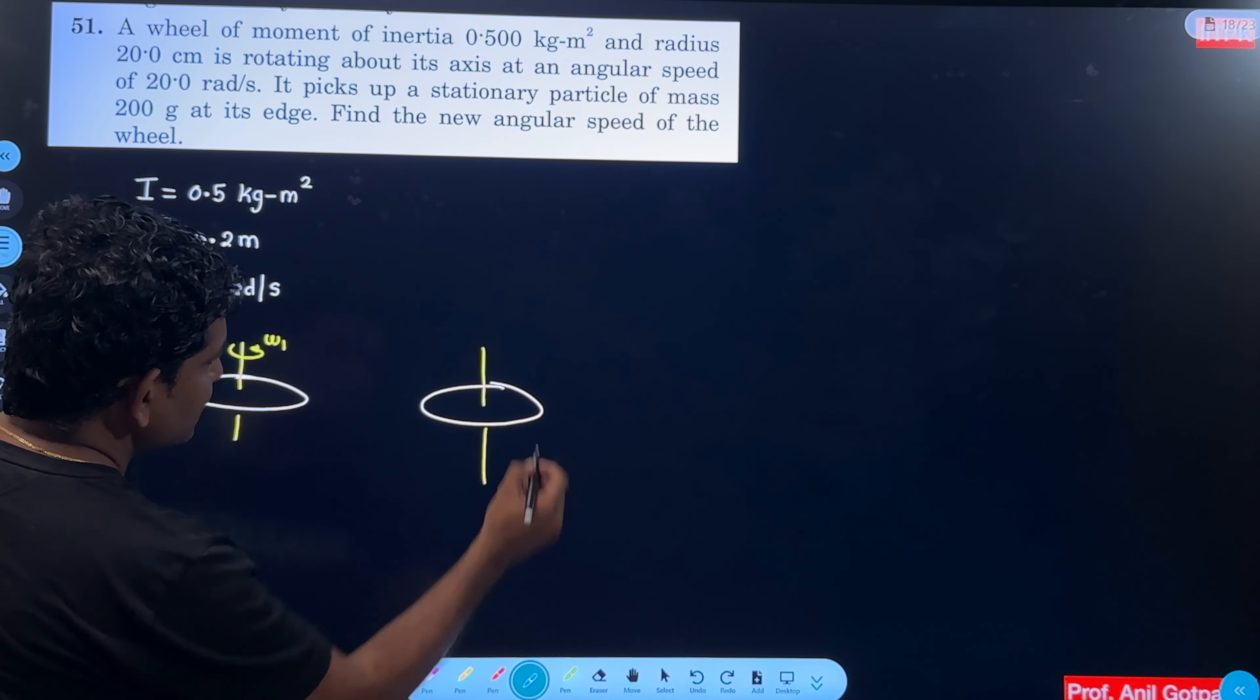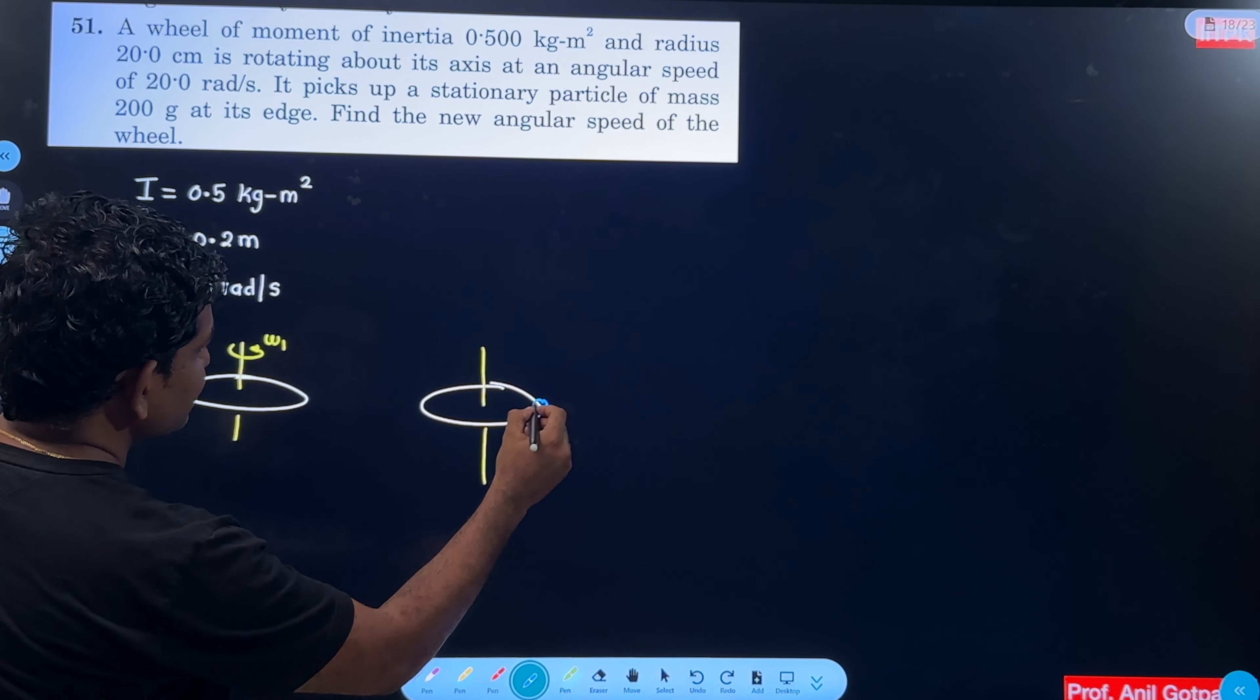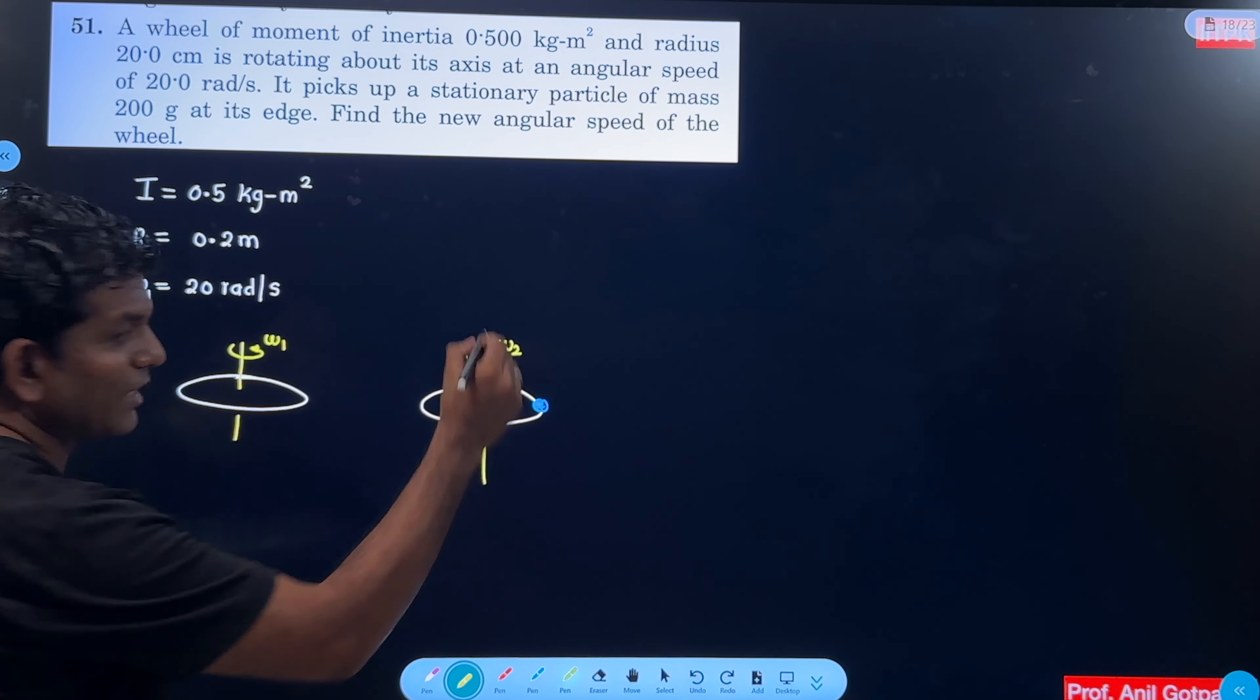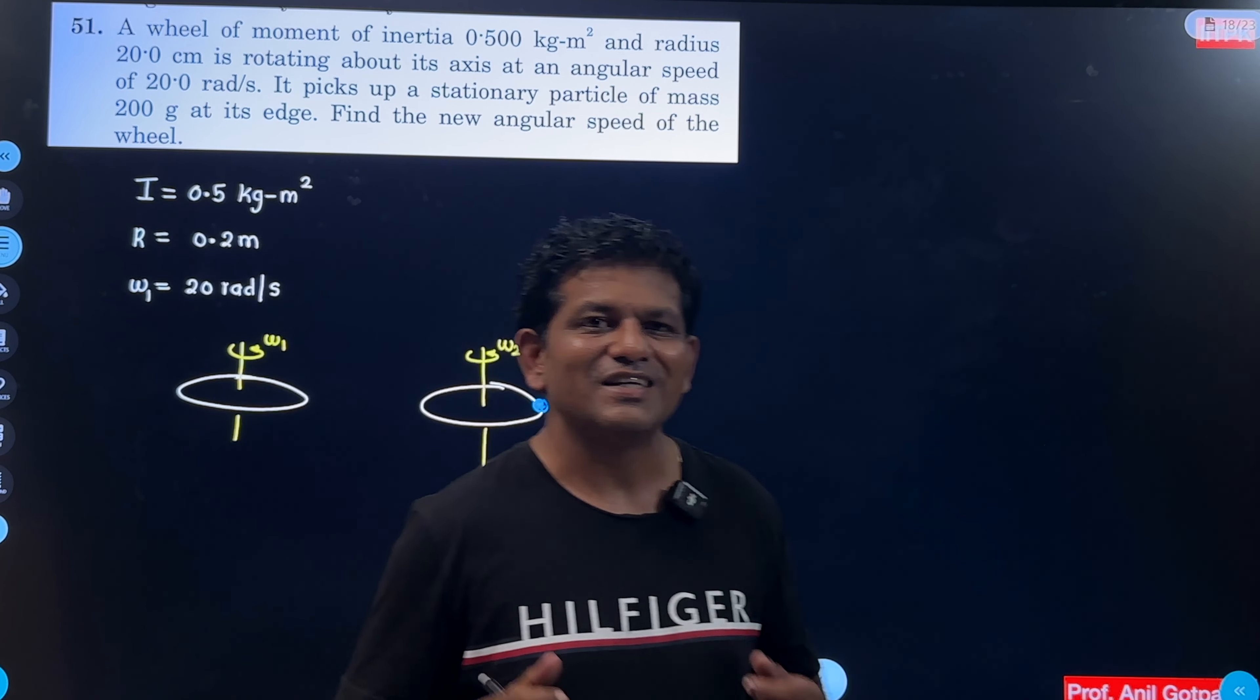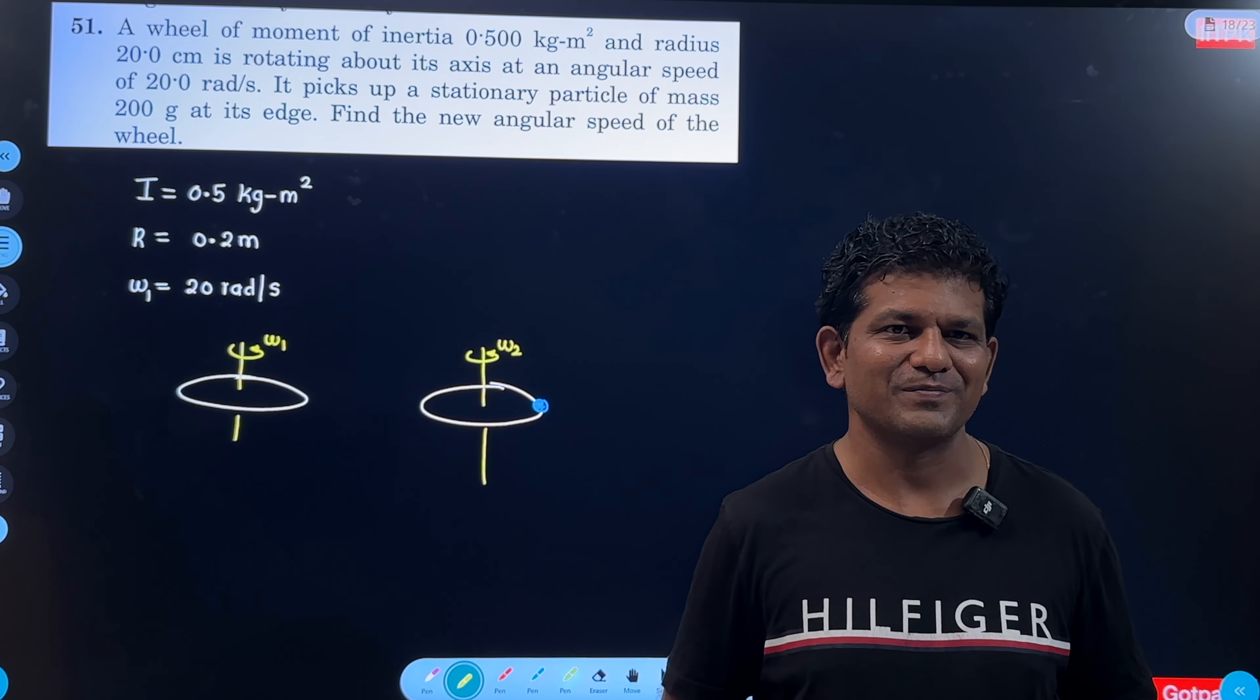So this particle is on its edge. So this will also rotate from new angular speed. Why? Because this system has the moment of inertia increased. Correct?